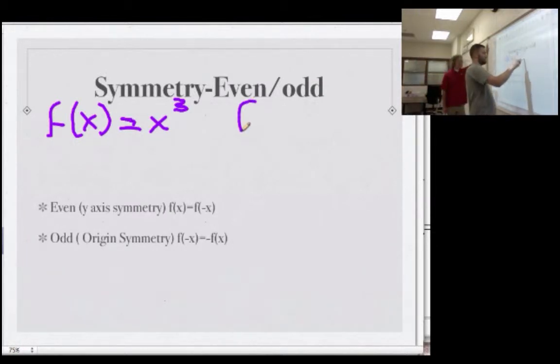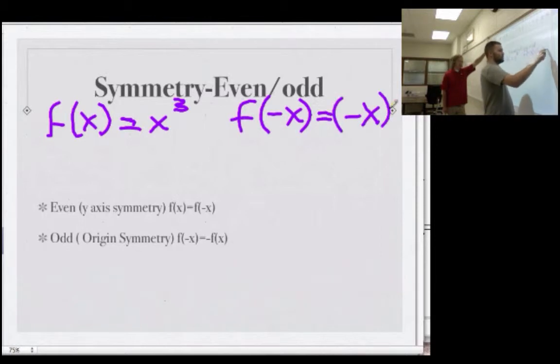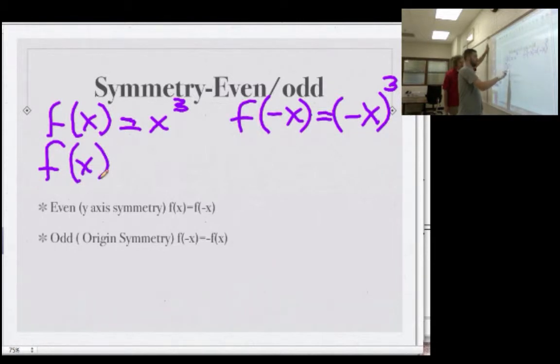So, let's do the same thing that we did when we were trying an even function. f of negative x equals, let's see, negative x cubed. Okay, so that means, since I've got a cubic, I'm going to go negative x times negative x times negative x. I think I'm going to end up with a negative, correct.